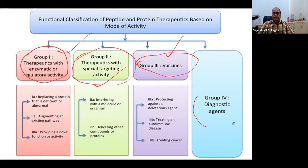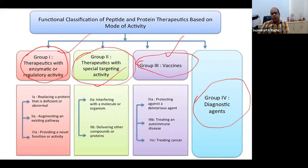The fourth category is diagnostics. In a number of diseases, certain peptides or proteins are released into body fluids like blood and urine, and based on these molecules you can design diagnostic tools to detect whether a disease is present. These are the four major categories of protein and peptide-based therapeutics, though there are other categories as well.